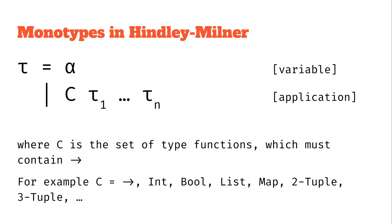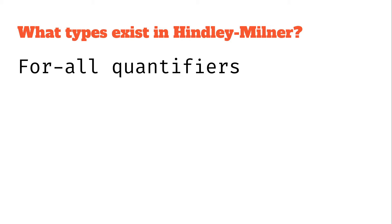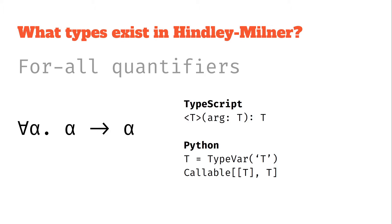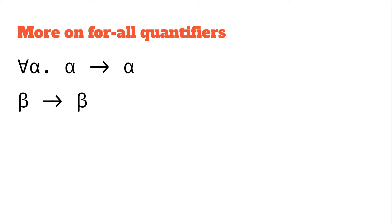Those are the monotypes in Hindley-Milner. There's also one more construct — polytypes — formed with for-all quantifiers. It looks something like: for all alpha, alpha to alpha. This means for any type, it's an identity function from that type back to the same type. In TypeScript or Python this looks like an identity function with generics. You might wonder: isn't beta to beta basically the same thing? Actually it's different — alpha in the top line is bound by the for-all quantifier and can take any value.